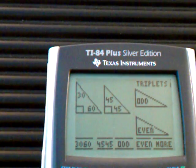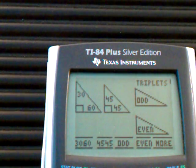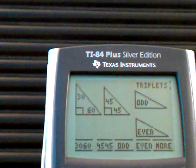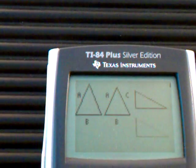You have 30-60-90, 45-45-90, your triplets, your odd and even triplets. They pretty much run exactly the same. So I want to show you these other ones.